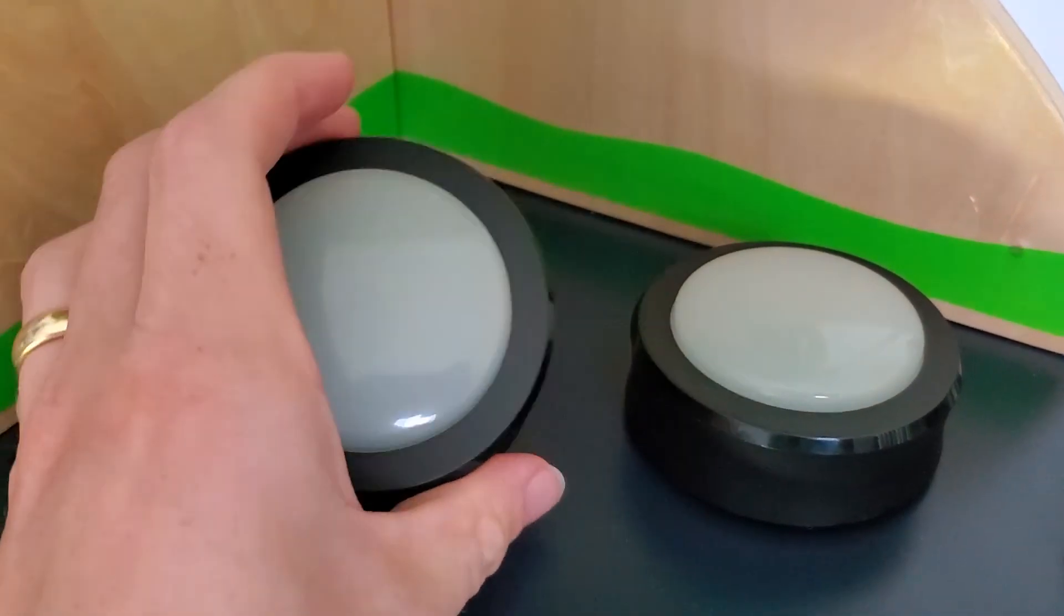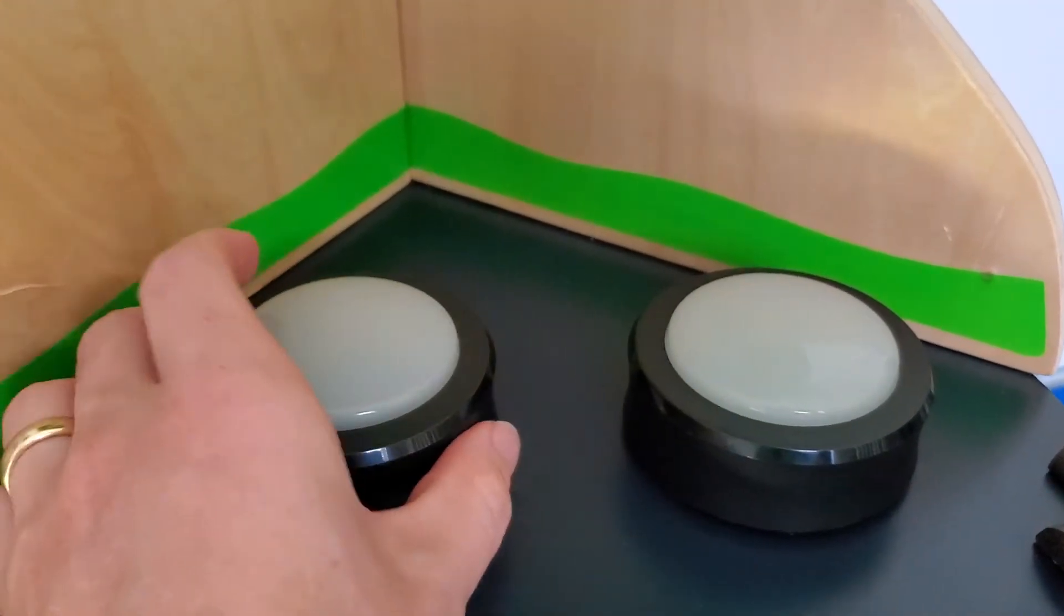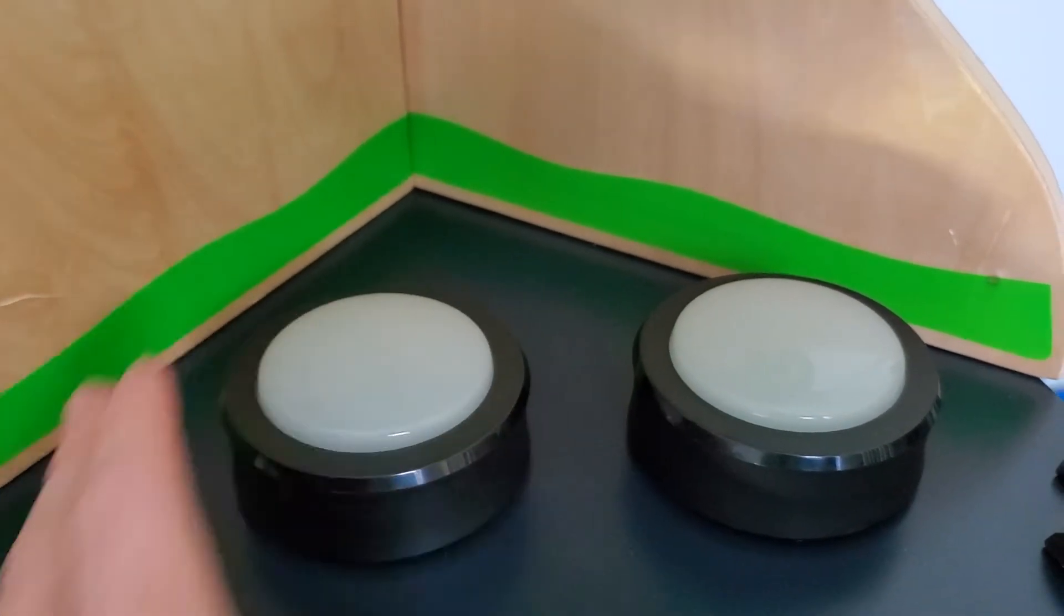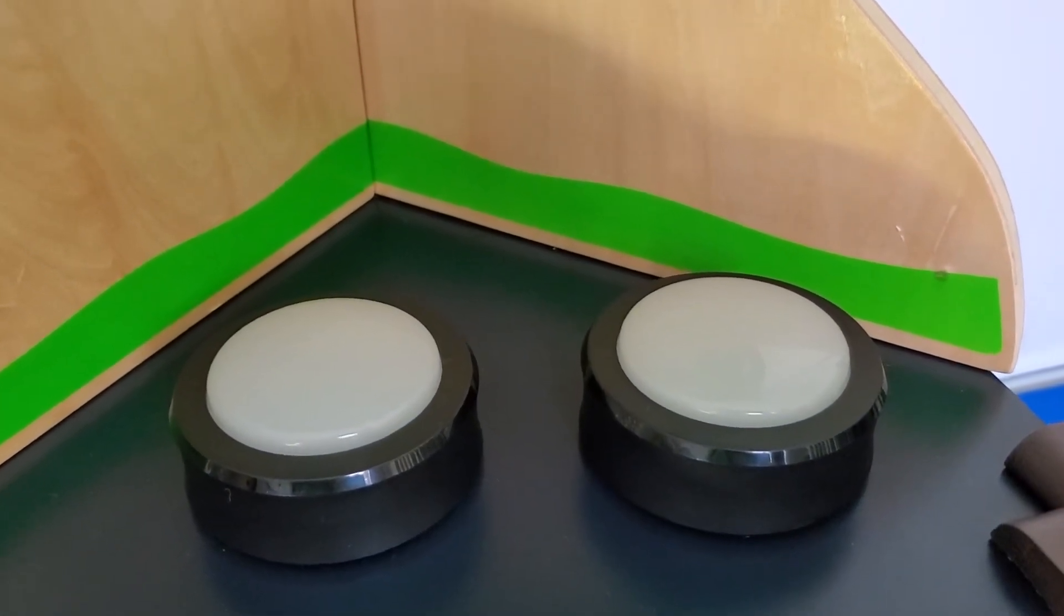But because you do get two in a pack, it's easy enough to set that up. And it's actually kind of cool because I put one of these on one side of the room and one on the other. It becomes an activity where your kid can run back and forth and press the button to shut their lights on and off.